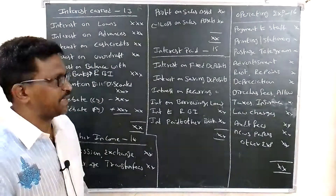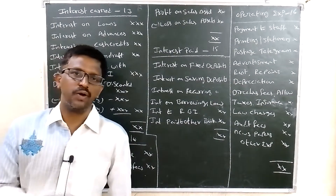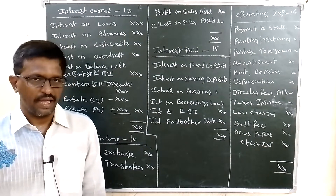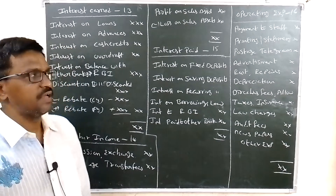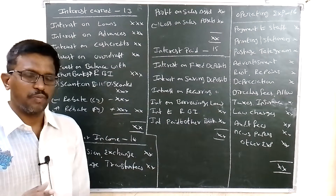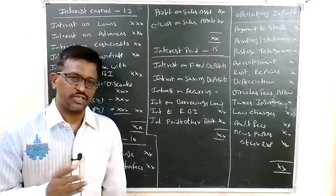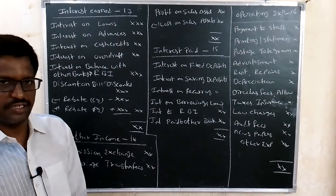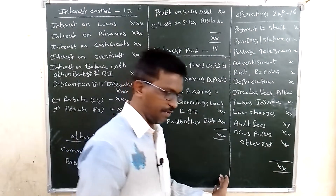Next is Schedule 16: operating expenses. These include payments to staff — salary, bonus, gratuity, pension, allowances, and traveling expenses. Also included are printing and stationery, postage and telegram, advertisement, rent, rates and taxes, insurance, depreciation, director fees and allowances, newspaper, entertainment expenses, cleaning charges, and other operating expenses.